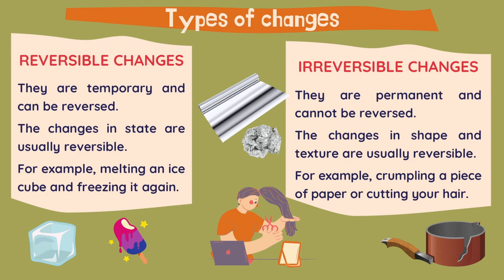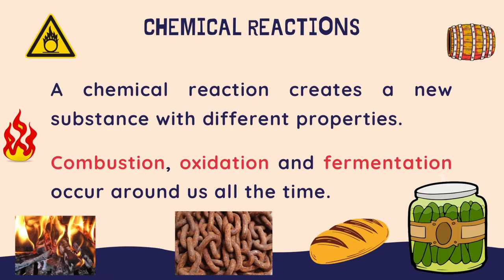Irreversible changes are permanent and cannot be reversed. Changes in shape and texture are usually irreversible. For example, crumpling a piece of paper or cutting your hair — you cannot put it back together. Even though your hair will grow back, this aluminum foil or a piece of paper, once crumpled into a ball, cannot be put back to the first state.